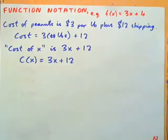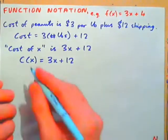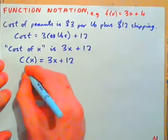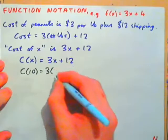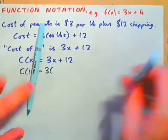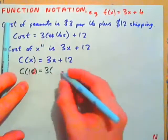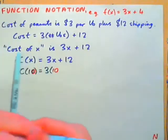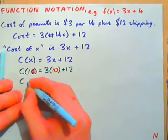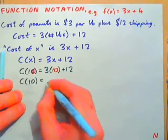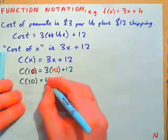Why do we even bother with it? Because if you use that notation, you can do this. That's C of 10 equals 3 times... And where do you think the 10 goes? If x is 10, wouldn't 10 go here? 3 times 10 plus 12. So, C of 10 equals 30 plus 12, 42.